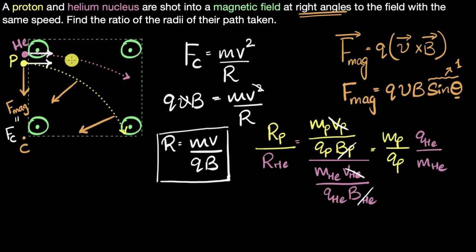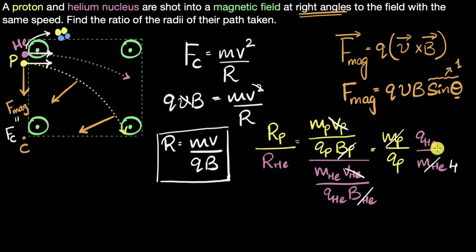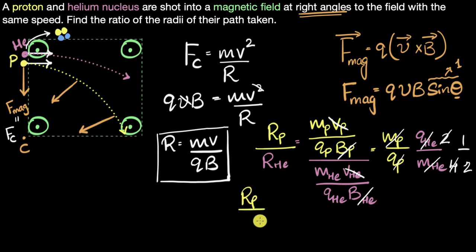The helium nucleus is made of two protons and two neutrons. Protons and neutrons pretty much have the same mass, so helium has four times the mass of the proton. That means mHe equals 4mp, so the mass terms give a factor of 4. Neutrons have no charge; helium has two protons, so its charge is twice that of a single proton, giving a factor of 2. The ratio simplifies to 1 over 2. So the radius of the proton divided by the radius of the helium nucleus is one half — helium takes a larger circle.